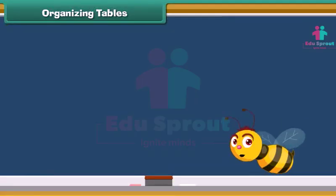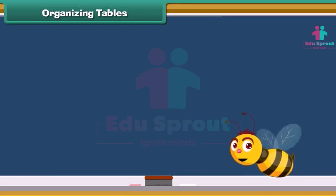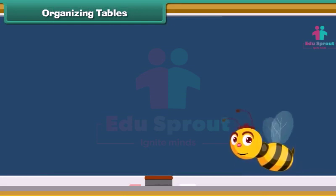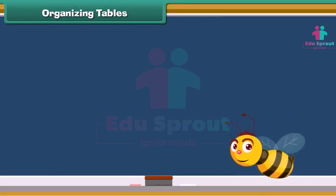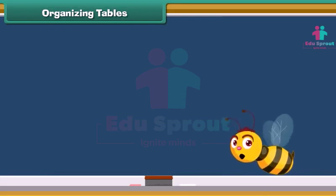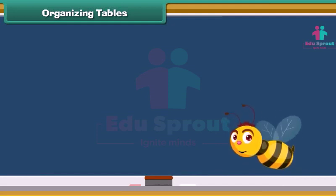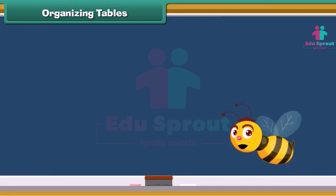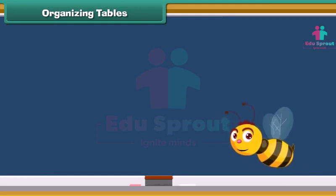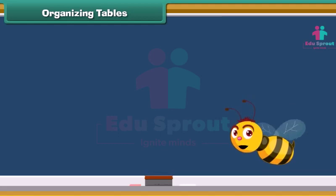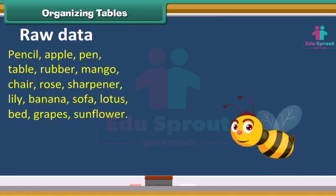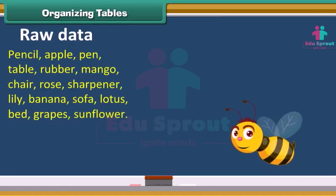Friends, it is easier to find out things when they are kept properly. Well-arranged things are easy to handle. Similarly, organized data is easy to interpret. Unorganized data is called raw data.